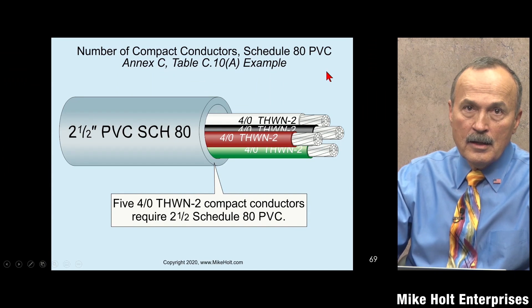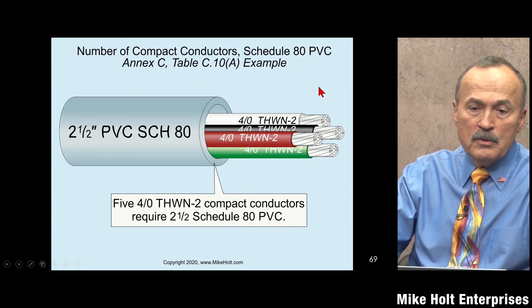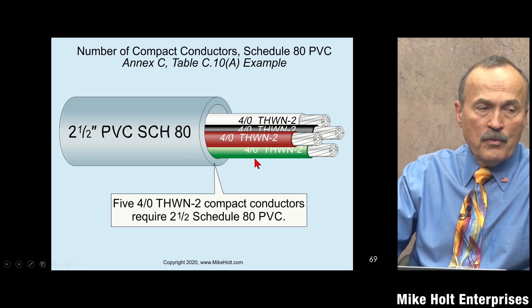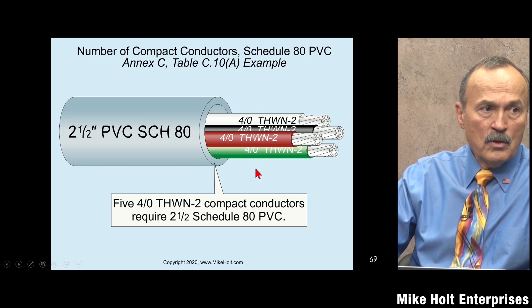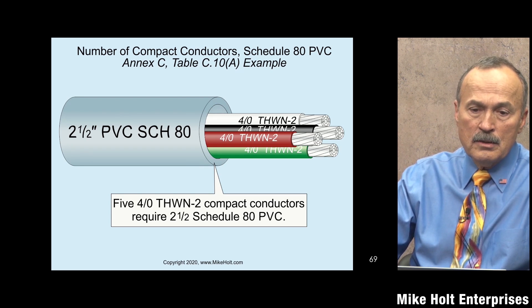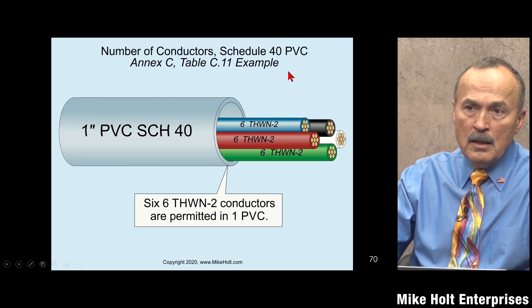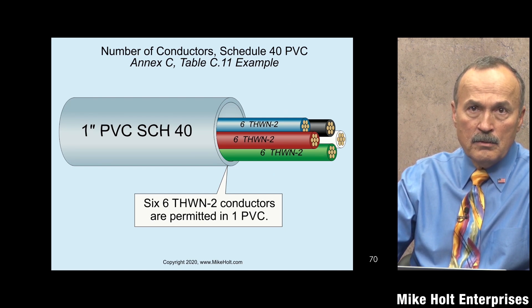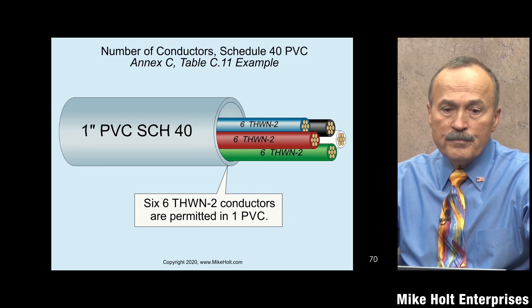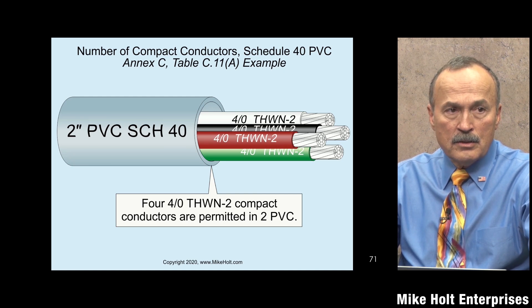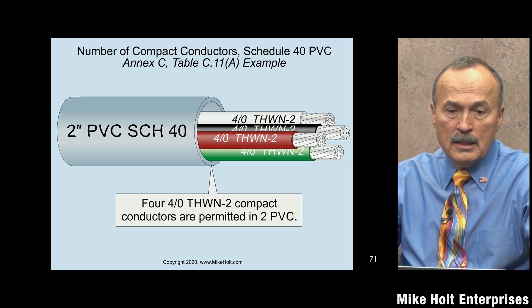Moving on to compact conductors: Table C.10 parent A - just look at the table and the answer in the book. Here's another example with PVC Schedule 40 - not going to get into the details, you can look it up. And here's a compact conductor example - you should be looking these up yourselves.